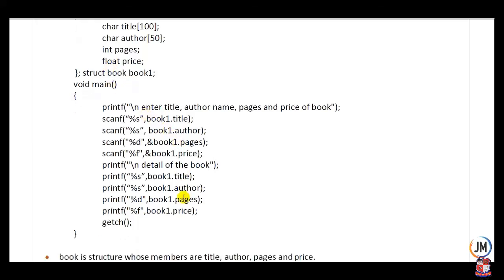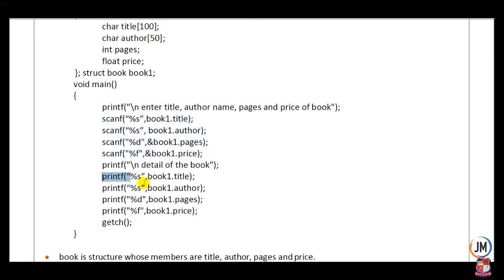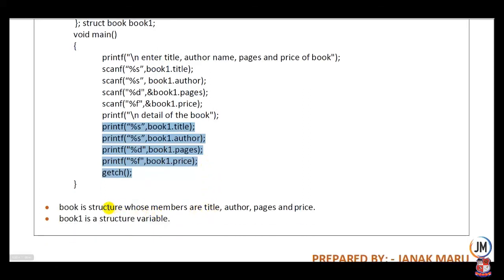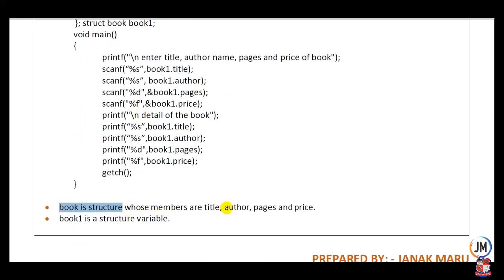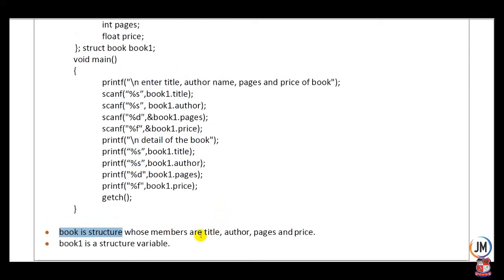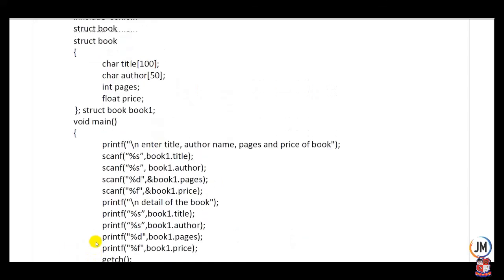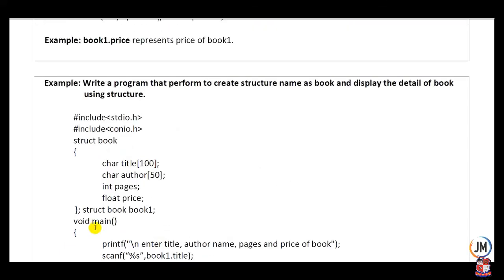After that, a printf statement is written to display 'Detail of the book'. Data entered by the user is received using scanf, and all the data is printed using printf statements. Here, 'book' is a structure with members: title, author, pages, and price. And 'book1' is the structure variable.